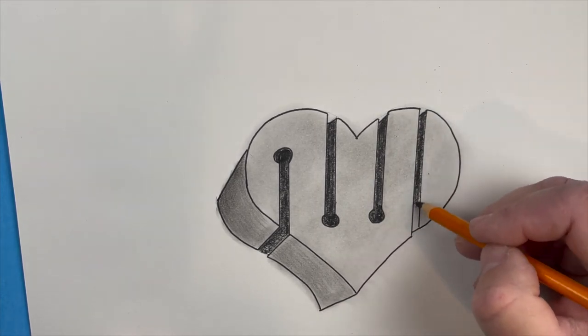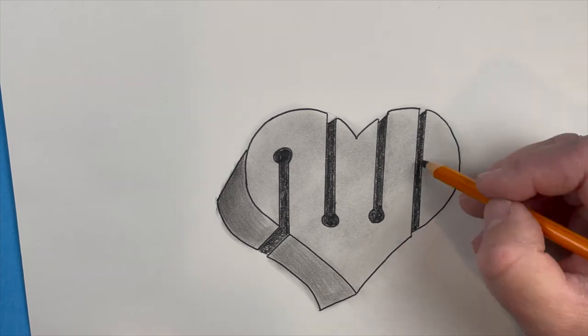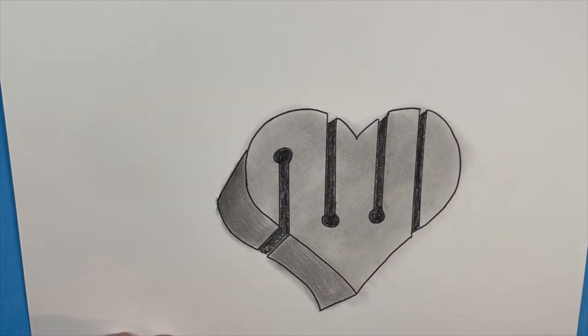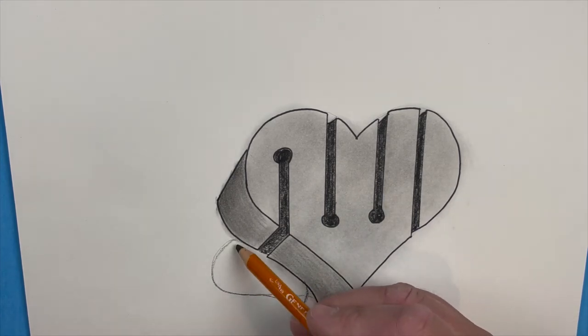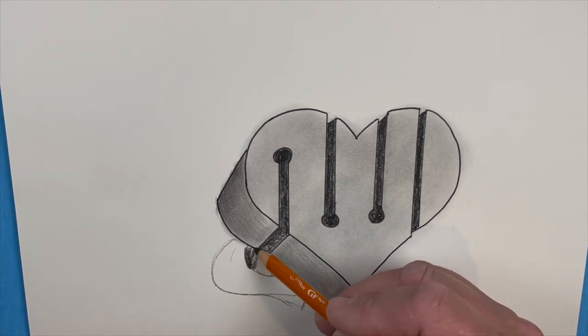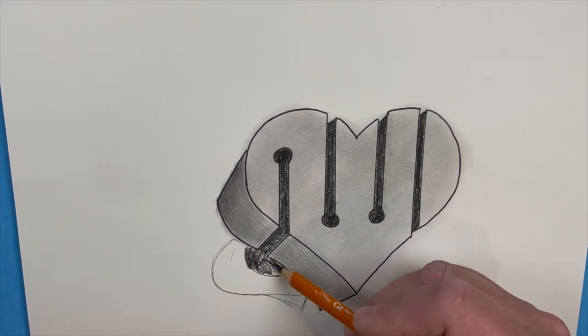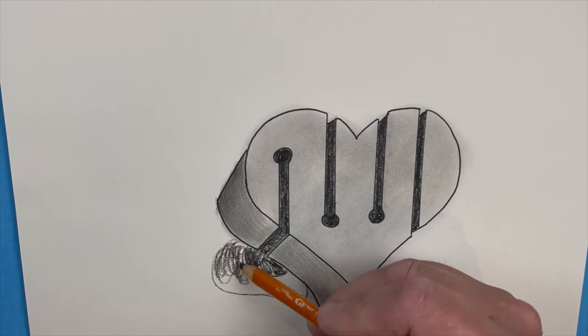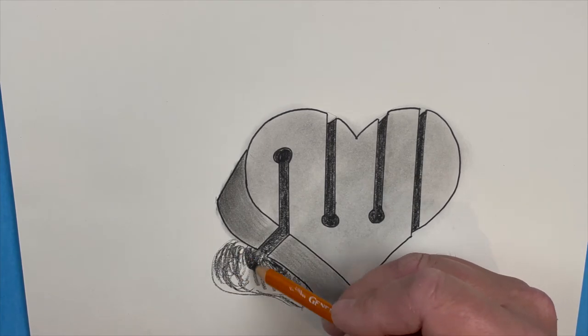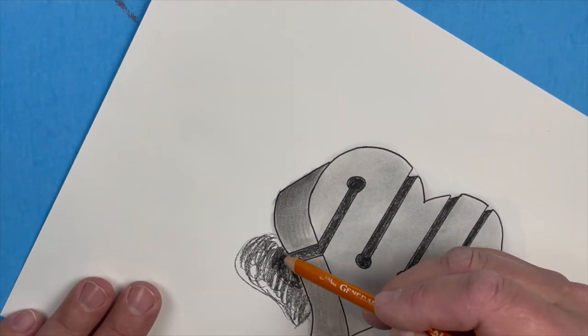The next step, we're going to make a shadow on one side. Picture almost like the heart coming down and you're going to make a shadow. Again you're going to make it a little bit graded, which means you're going to start a little bit darker on the inside and then work your way out into a little bit lighter.